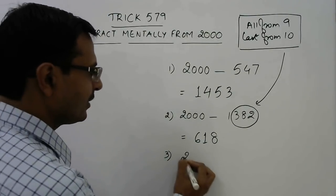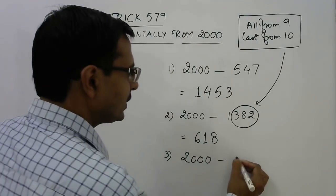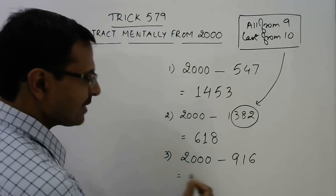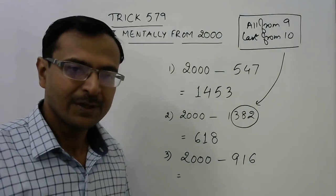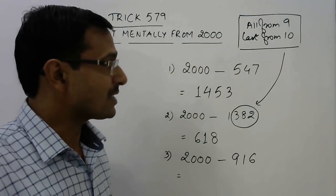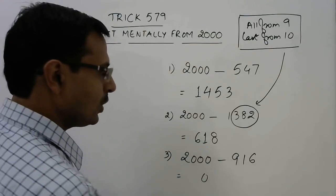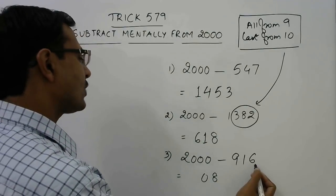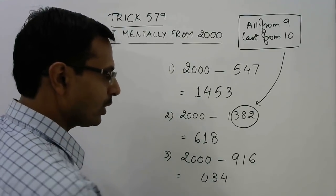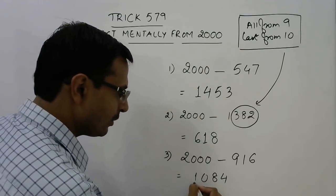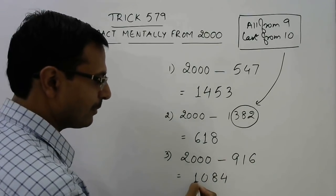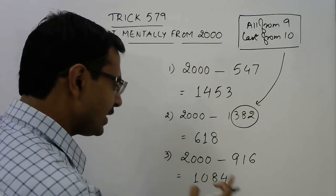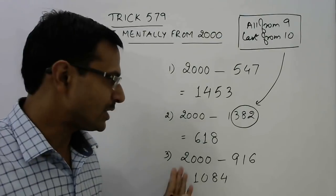Suppose we need to subtract 916 rupees. This amount is less than 1000, so first apply 'all from 9 and last from 10': 9 minus 9 is 0, 9 minus 1 is 8, and 10 minus 6 is 4. Then prefix a 1, because this amount is less than 1000. So 1084 is the difference of 2000 minus 916.